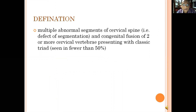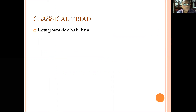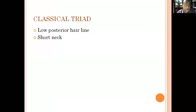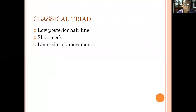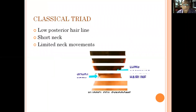There is congenital fusion of two or more cervical vertebrae and in 50% of cases it presents with a classical triad. The classical triad comprises of low posterior hairline, shortening of neck, and limited neck movements.